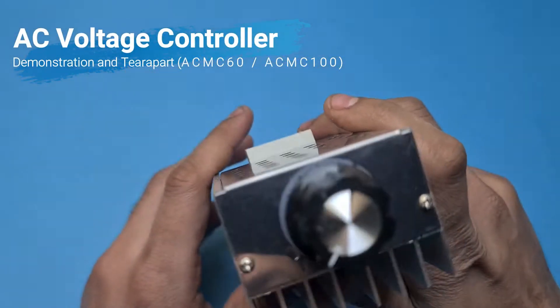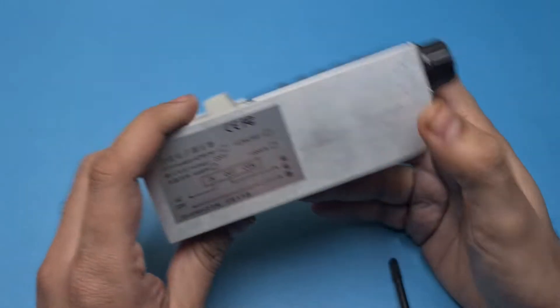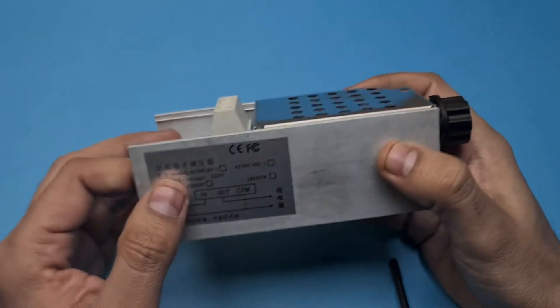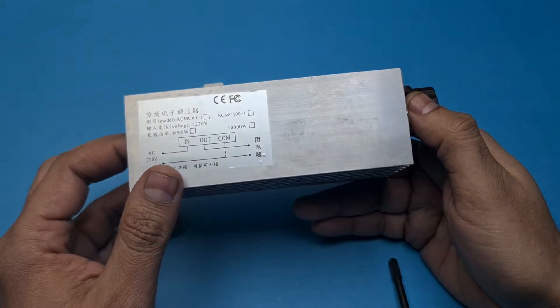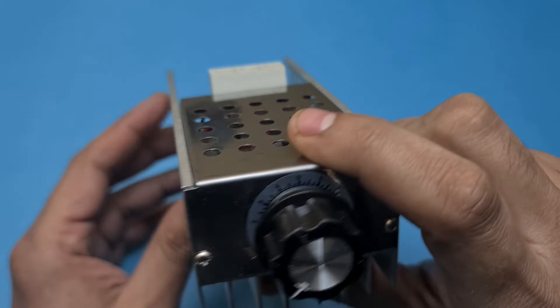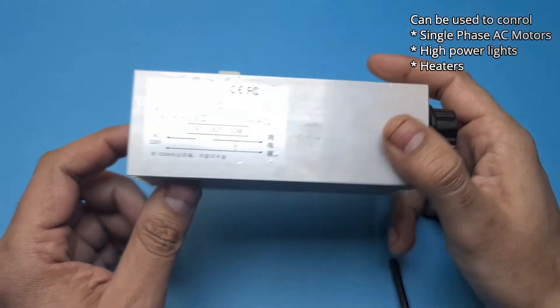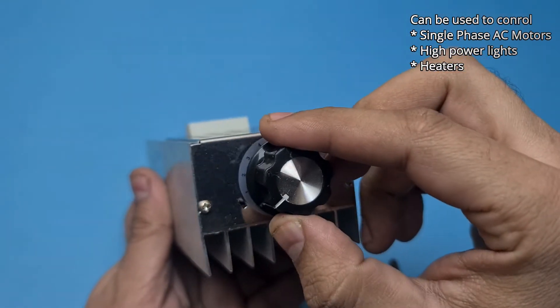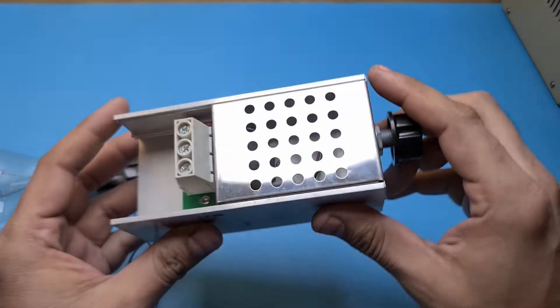Hi friends, right now I am holding an AC voltage controller in my hands. It is a general purpose AC controller that can be used to control the speed of single phase AC motors. It can also be used as a dimmer to control light of high power lights, and you can even control heating power of heating elements with this controller.